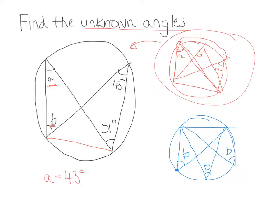What that means is that here, if we drew in a line there, angle B is 51, it will be the same as that there. So these two angles are equal, so B would be equal to 51.